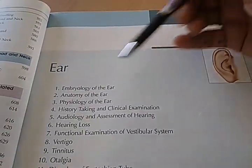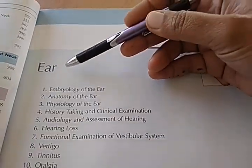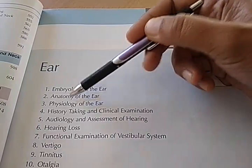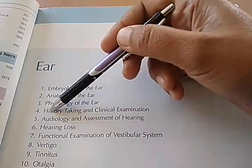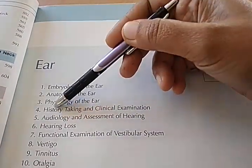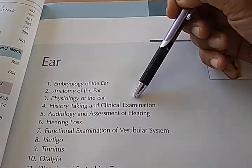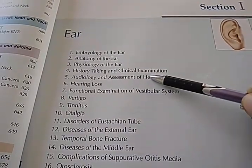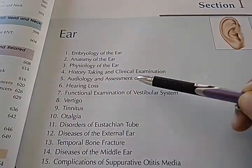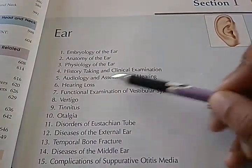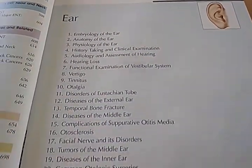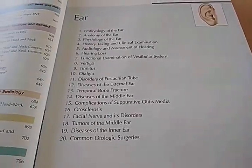One thing you notice here is in the ear section, you have embryology, anatomy, physiology, and then they come to history taking and clinical examination. Then they go to other things like hearing, assessment of hearing, hearing tests, hearing loss, etc.